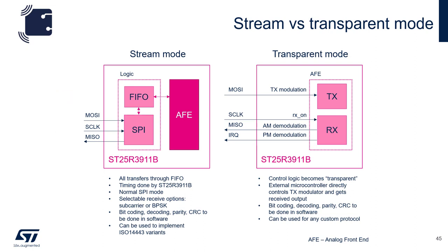In stream mode, all the transfers are done through the FIFO and the timing is done by the 3911B. The bit coding, decoding, parity, and CRC are done in software, and this mode is typically used to implement variants of ISO 14443. In transparent mode, the 3911B acts as an RF front-end and the control logic becomes transparent. The external microcontroller does everything — it controls the TX modulator and gets the received output. All bit coding, decoding, parity, and CRC is done in software; however, transparent mode can be used for any custom protocol.